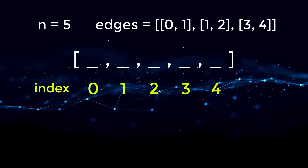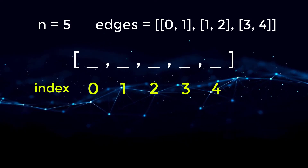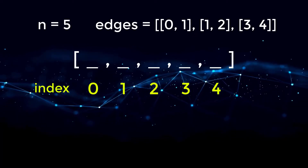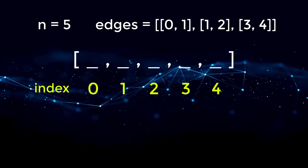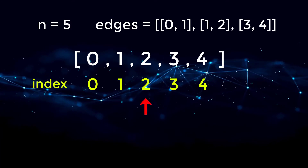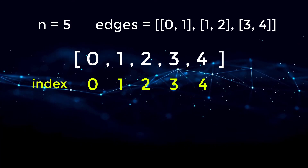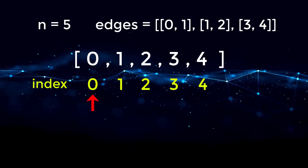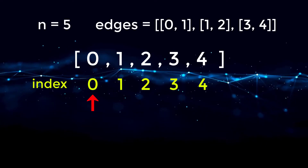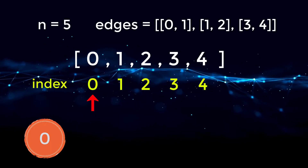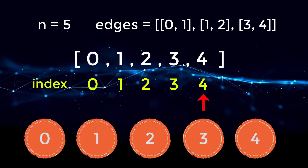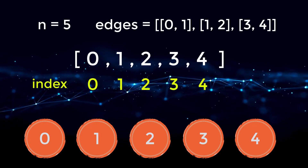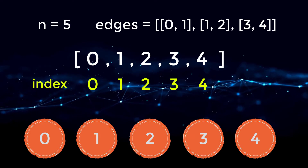We initialize an array of size five since we have five nodes, where each value in the array is the parent of the node at that index. Initially, all nodes point to themselves: zero points to zero, one points to one, two points to two, and so on. Looking at index zero, node zero points to value zero, meaning zero is its own subset. Same for one, two, three, and four — they're all pointing to themselves. So right now we have five separate subsets, which initializes our UnionFind data structure.